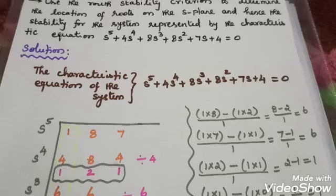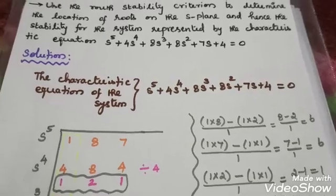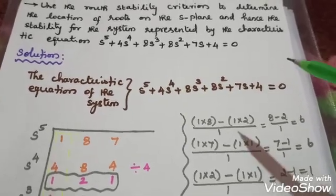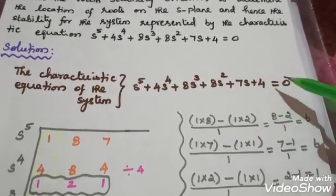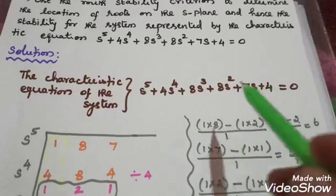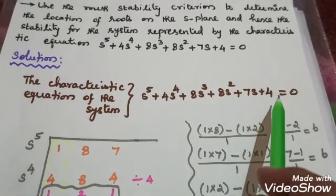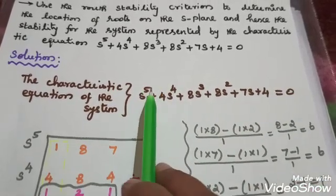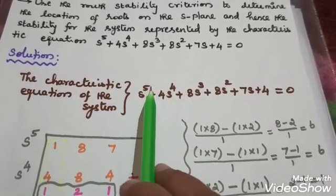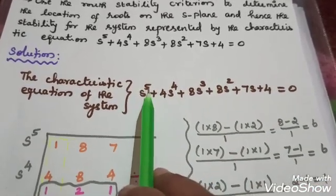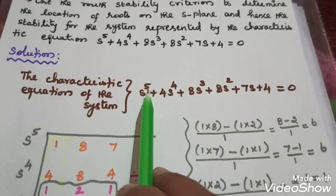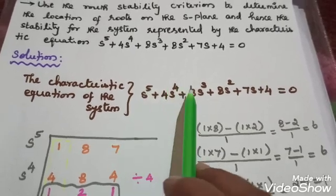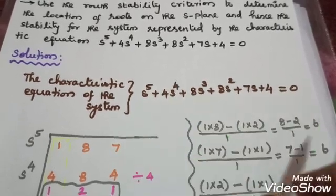Now we'll complete the problem. If you want to conclude the problem, first you have to write the characteristic equation. You have to write the highest power of S. The highest power of S is 5. Therefore, the number of roots is equal to 5.